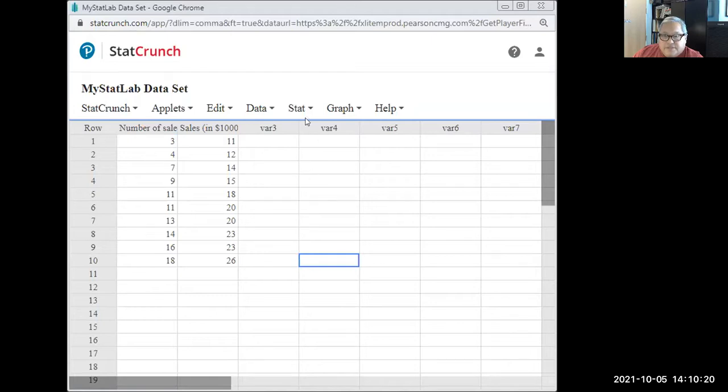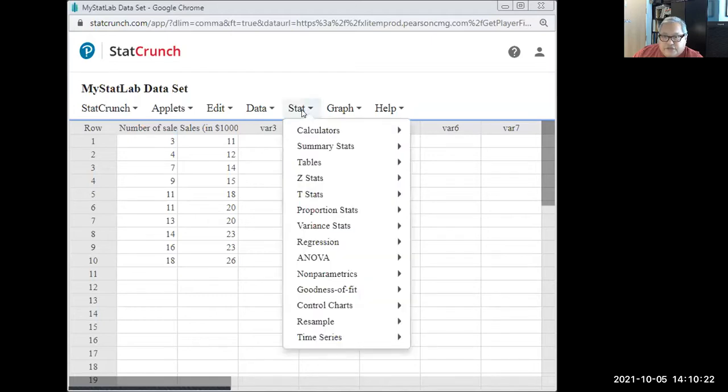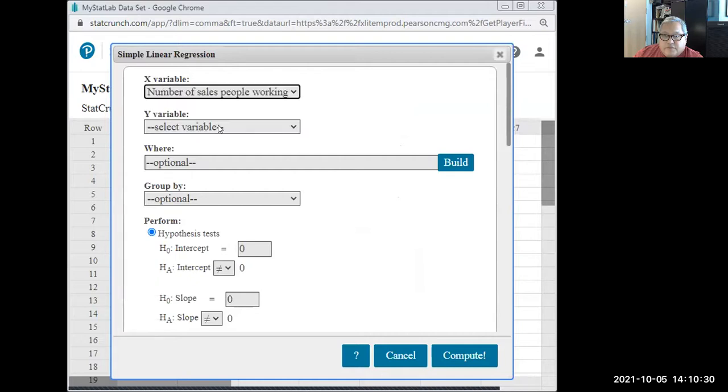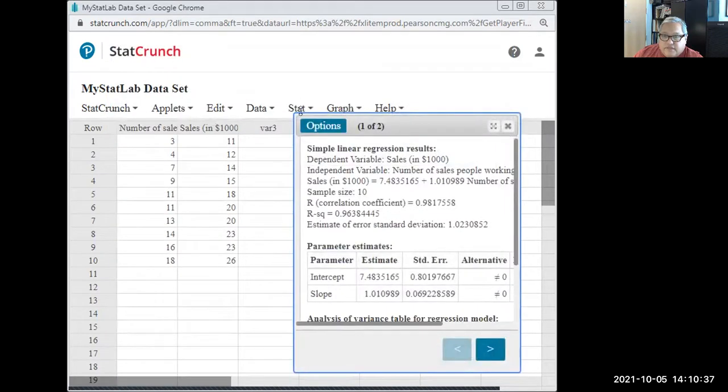And in the last video that I shared with you, we went through stat regression simple linear, pick the x variable to be the number of salespeople, and the y variable to be sales in thousands. And then I compute, and that's it.